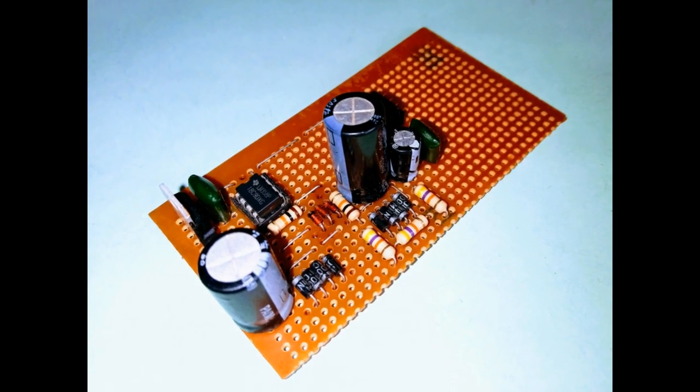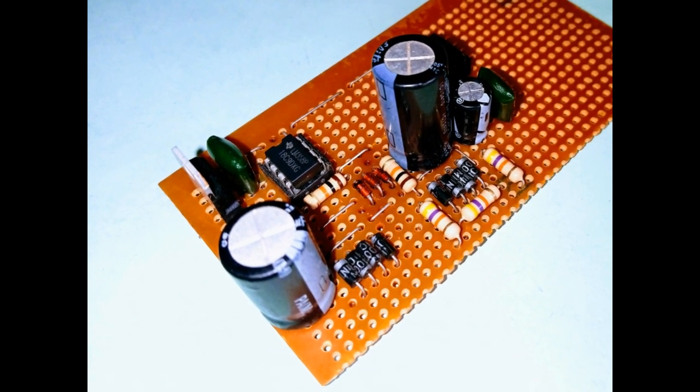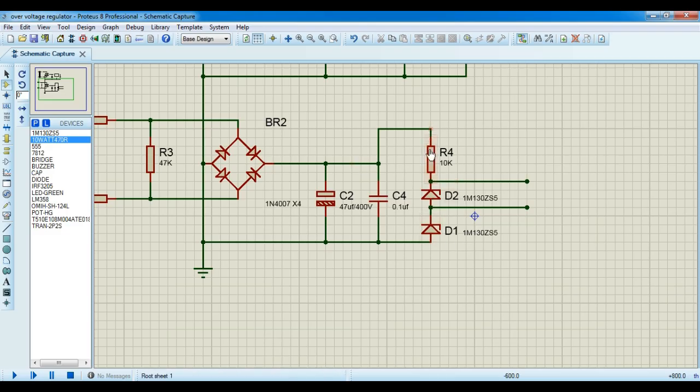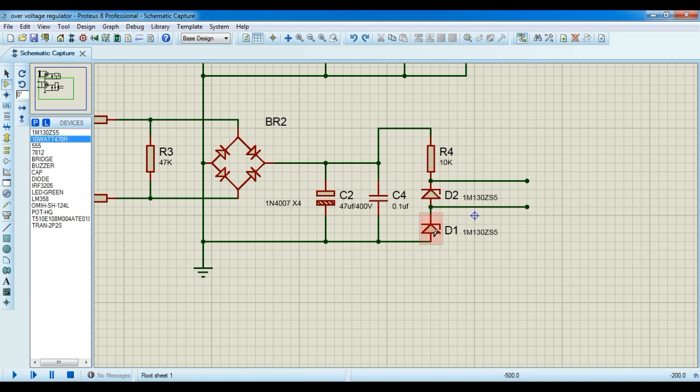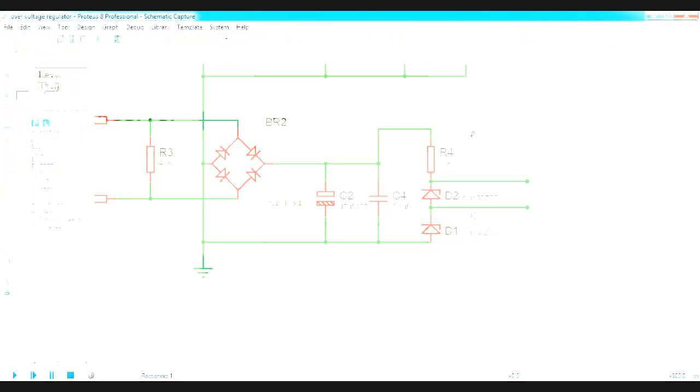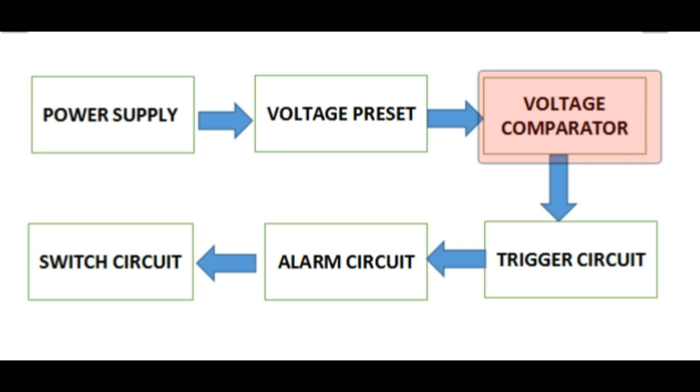This circuit is soldered on the perf board as we move to the next block diagram which is the voltage preset. The circuit consists of a 10k resistor, the two zener diodes which are connected in series as we will use the accumulative breakdown voltage relative to ground to preset our voltage point. We are using their relative DC voltage to represent the preset AC voltage value which is either over voltage or under voltage.